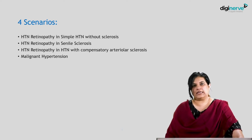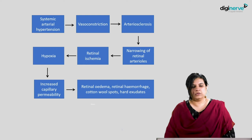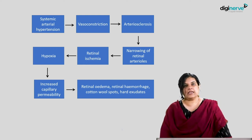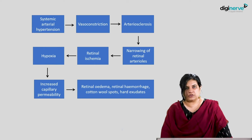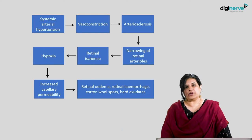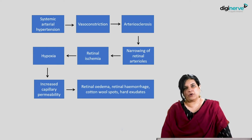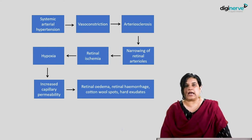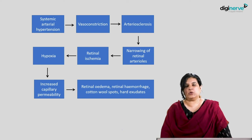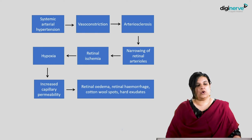Running through the course again: systemic hypertension leads to vasoconstriction, which results in arteriosclerosis involving the arterioles by causing narrowing. This narrowed arteriole results in compromised blood supply to the retina, causing retinal ischemia, hypoxia, and increased capillary permeability. There would be an increased vascular permeability factor, leading to findings such as retinal edema, retinal hemorrhages, hard exudates, and cotton wool spots.